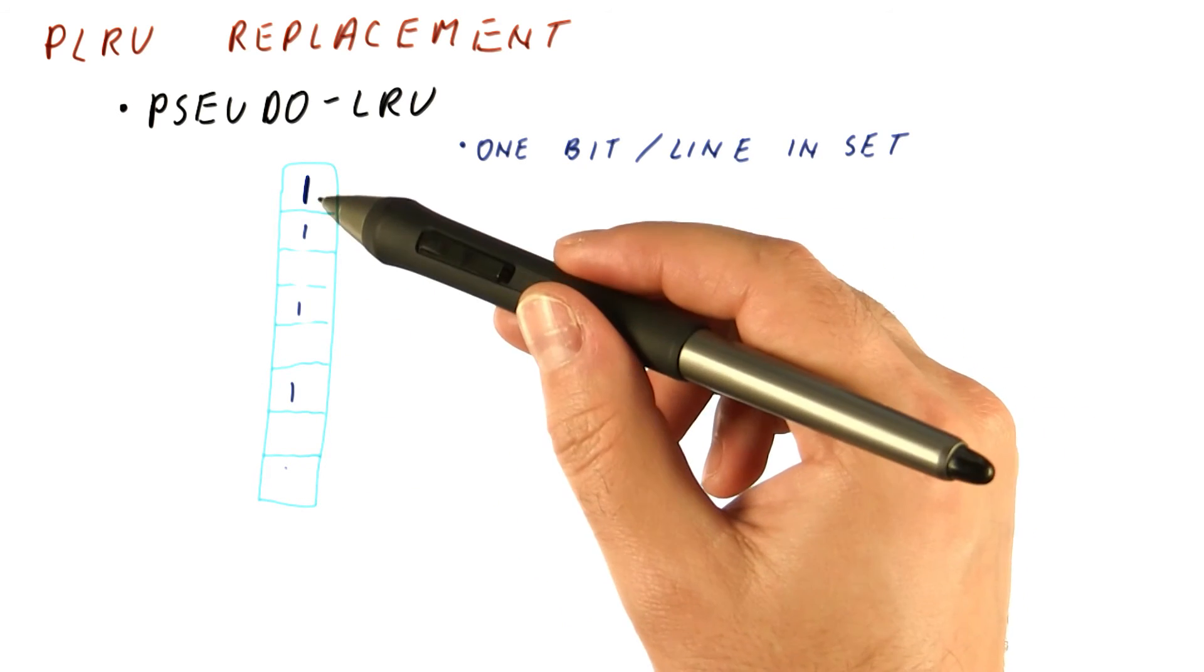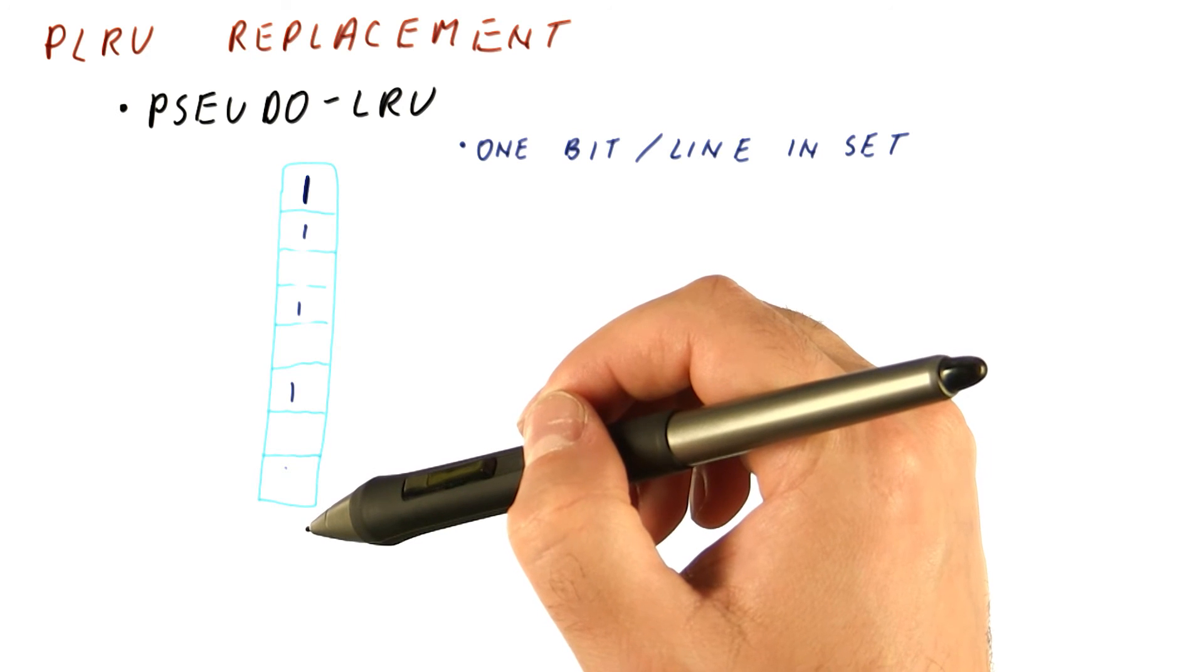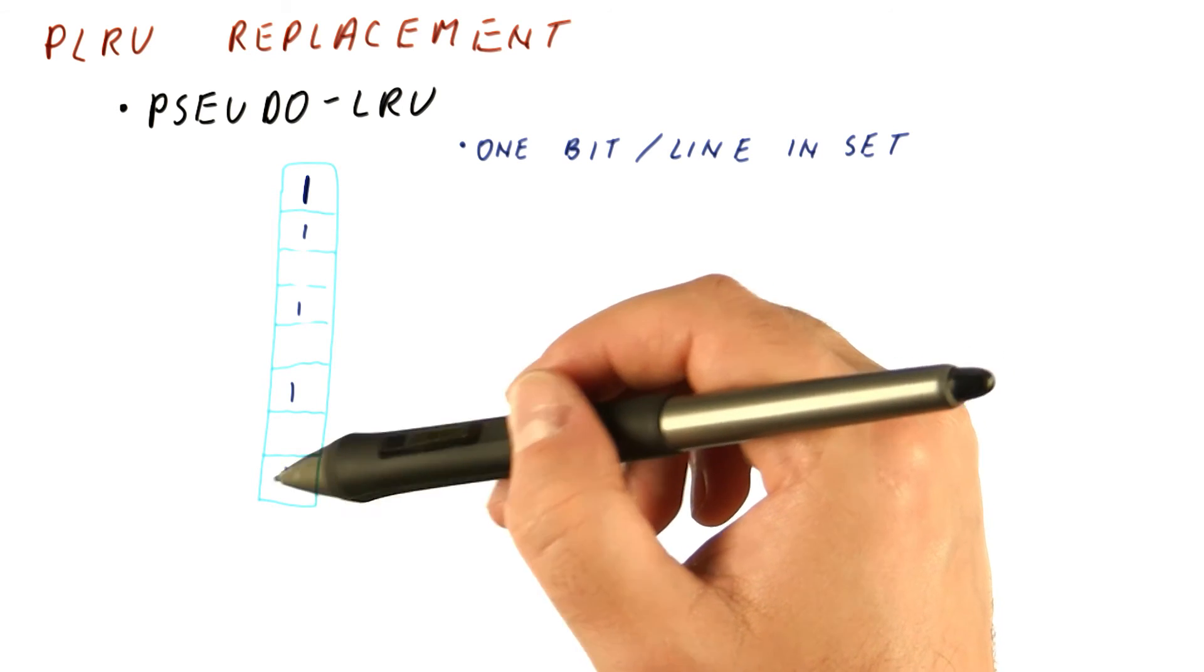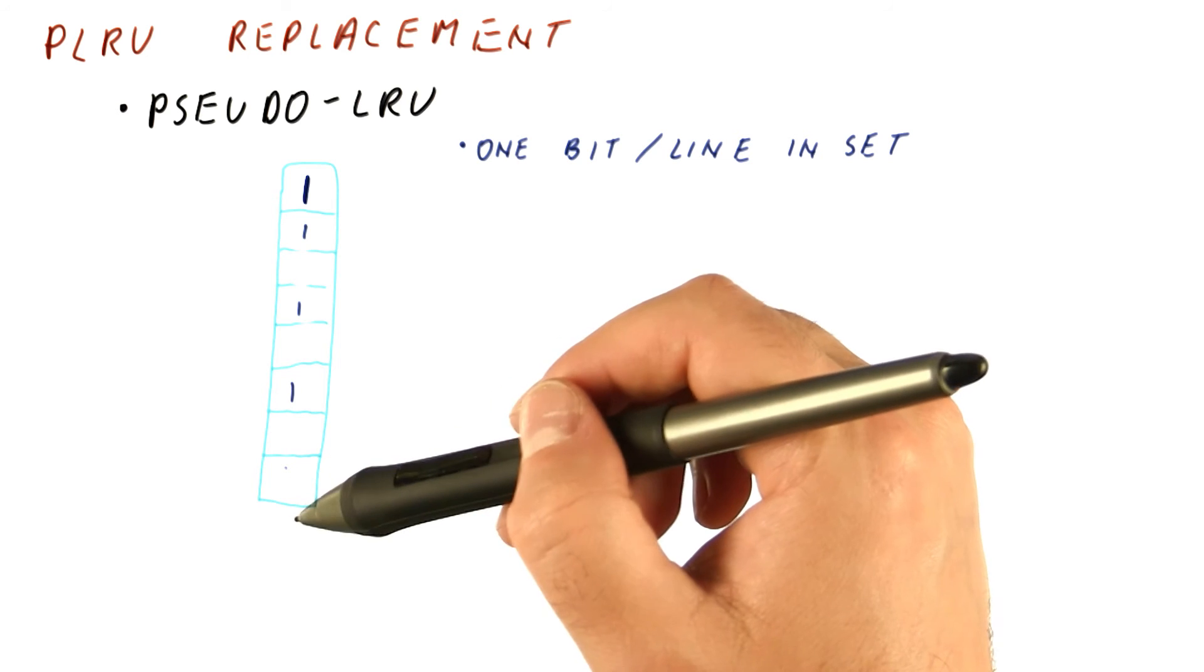When all but one are set, we are implementing the true LRU policy, because we know exactly which one block is the least recently used.